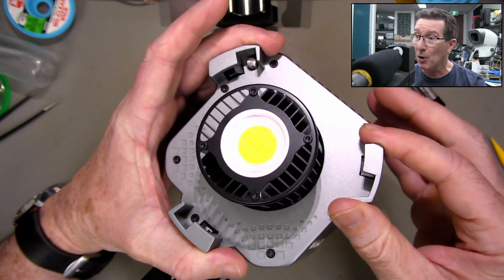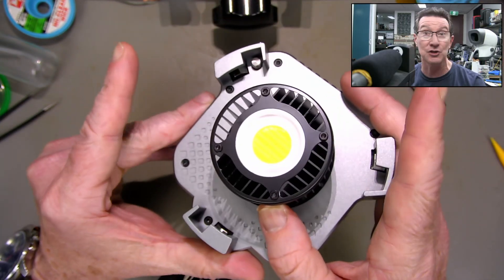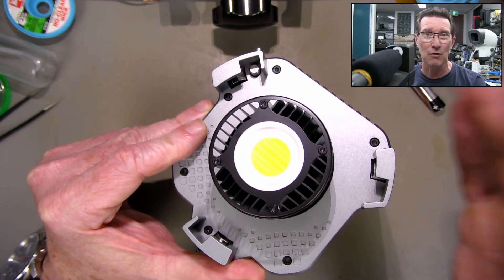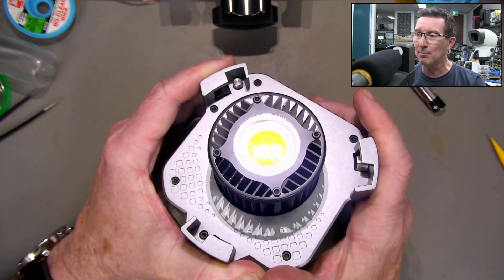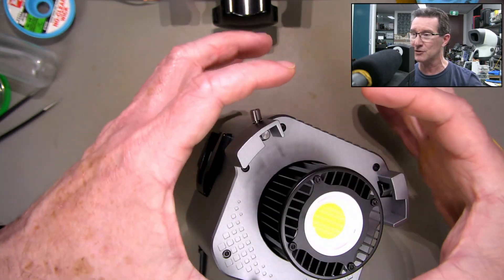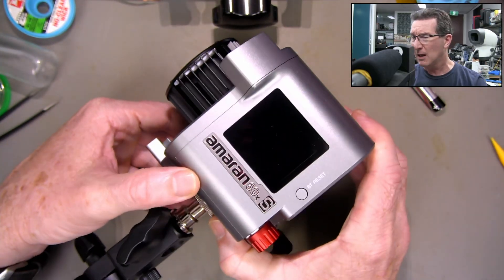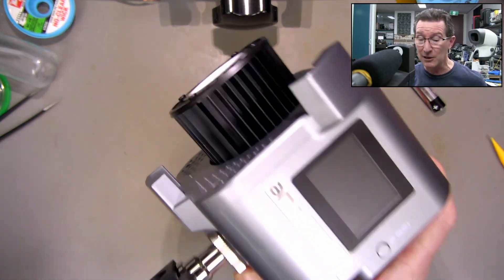It's got a Bowens mount on here, so it comes with a reflector. It's quite wide angle if you just use it like this. Very wide angle, but then you can narrow it down to like 12 degrees or something like that. It even comes with a little soft box adapter for it. So it's not a very big soft box, it's only about that wide. But you can get different soft boxes for it. And it's an awesome value studio LED light.